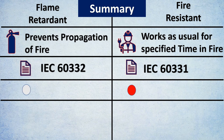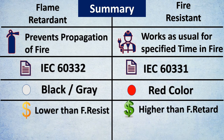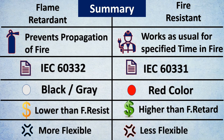Flame retardant cables are usually grey or black in color, while fire resistant cables are usually preferred to be red. These are thumb rules and depend on the design basis and client requirements. In terms of cost, flame retardant cable will have lower cost compared to fire resistant cable due to the insulation differences. In terms of flexibility, flame retardant cables are more flexible while fire resistant cables are comparatively less flexible.